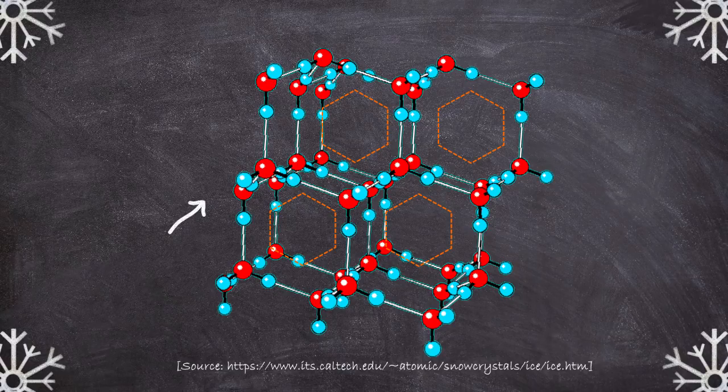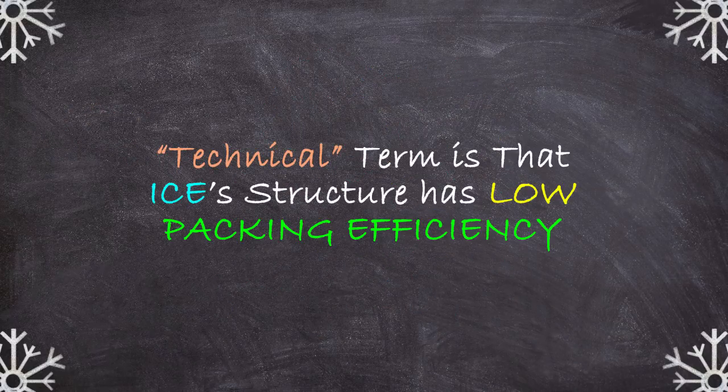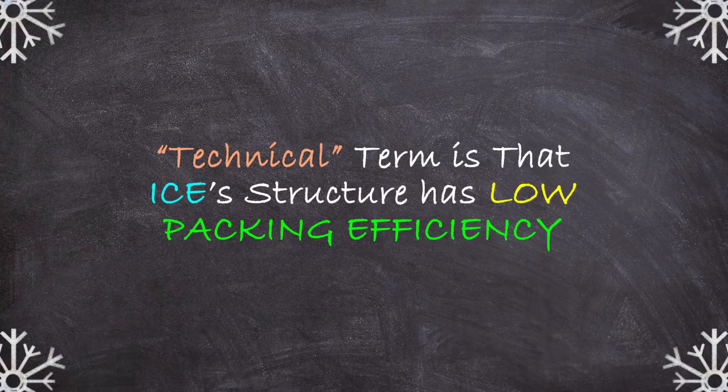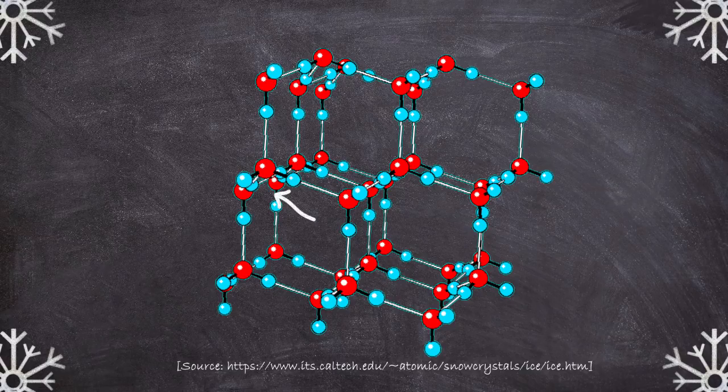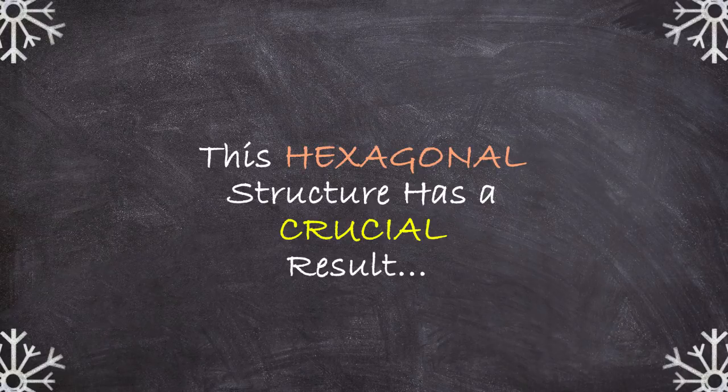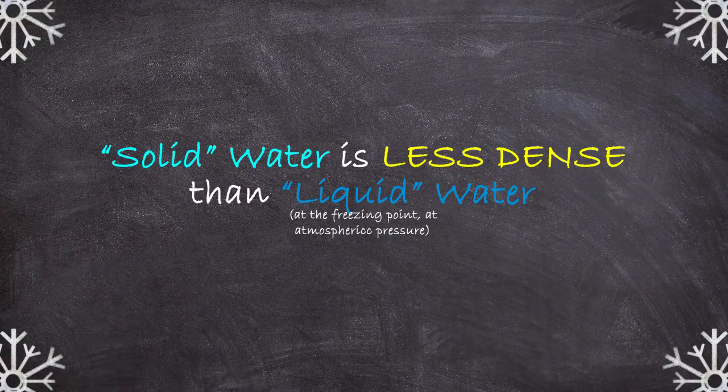And what is noteworthy about this hexagonal structure is that it's quite roomy. Now, roomy isn't exactly a technical term. The real word is that it has a very poor packing efficiency. But in a nutshell, in order to accommodate this bend in the molecule, the crystal structure of water is filled with a lot of unnecessary empty space. But this isn't just a bit of pointless trivia. Rather, as a result, the solid form of water is less dense than its liquid form.